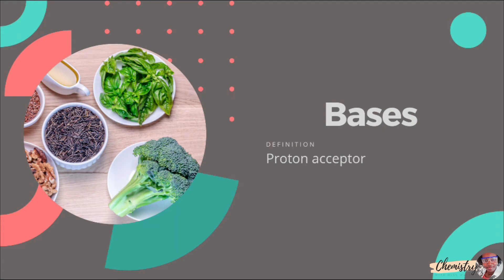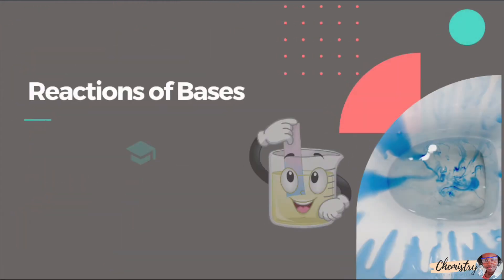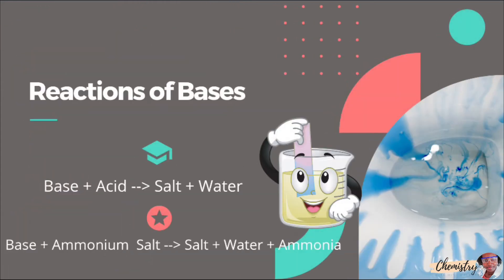On the opposite side of the spectrum to acids, we have bases. Bases are proton acceptors—they accept positively charged hydrogen ions. There are two reactions of bases that you should know: the reaction of a base with an acid, which we looked at in a previous video...